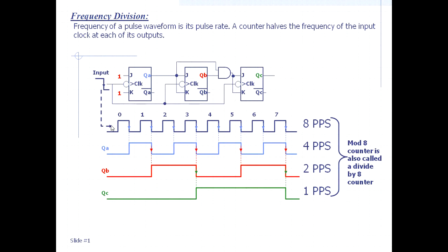If this is a clock, this is a clock. While this QA output is following the negative edge of the clock, this is half. See, this is half of what the clock is. This is half, and again the frequency becomes more half - means half of this half.